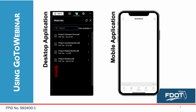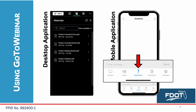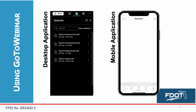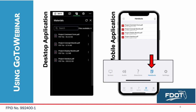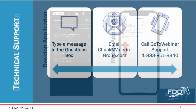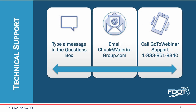If joining GoToWebinar on your mobile device, click the questions icon at the bottom of your screen. This will open the questions panel where you can enter your question or comment and hit Send. Click the handouts icon at the bottom to open the documents panel where you will find project files to view and download. If you experience a technical issue during this meeting, please type the issue in the questions box on the GoToWebinar control panel or send an email to chuck@valeran-group.com. You may also call 1-833-851-8340. Staff will do their best to assist you.